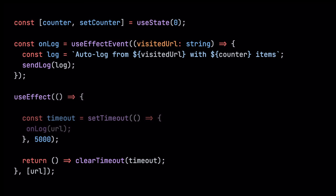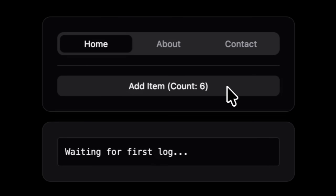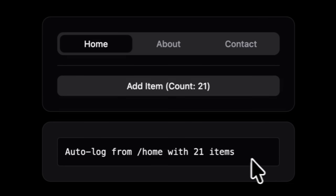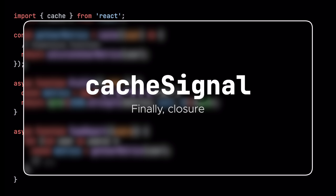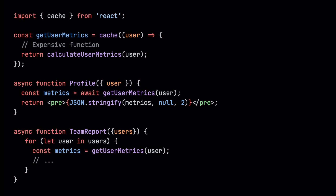We want to log the current value of the counter, so to fix this we can use the new useEffectEvent hook. We extract the logging into a useEffectEvent and take in the URL, then use this new function in our useEffect while leaving the dependency as it is. Now the log will successfully see the latest value of the counter after three seconds, because effect events can always see the latest prop and state values. The TLDR: use this for things fired from an effect rather than a user event.